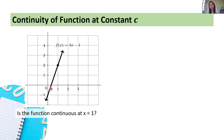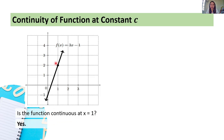Let's consider this. When we trace the graph of this function, and when it reaches the point at x equals 1, is there a hole, a jump, or a gap? If I have a pen and I trace the graph, will my pen lift? The answer is no — the pen will not lift. This means the function is continuous at x equals 1. You'll notice it's a straight line — no hole, no gap, no jump.